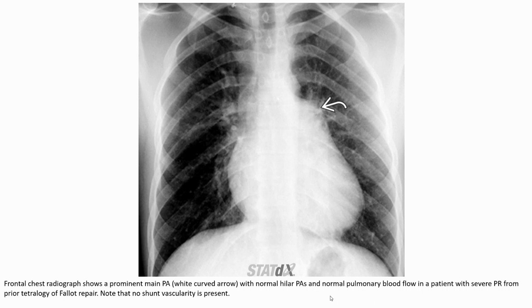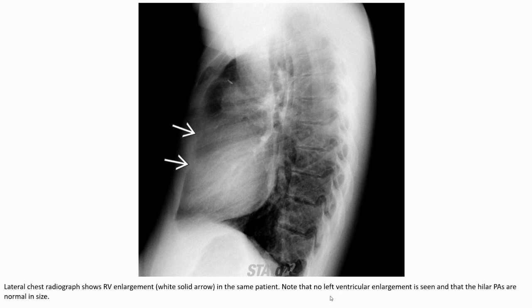This is a radiograph showing a prominent main pulmonary artery and normal pulmonary vascularity in a patient with severe pulmonary regurgitation from prior tetralogy of Fallot repair. Note that no left ventricular enlargement is present. On the lateral view of the same patient, no left atrial enlargement is present and the hilar pulmonary arteries are not enlarged.